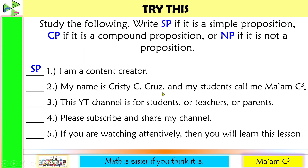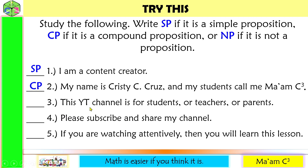We can break number two into: 'My name is Christy C. Cruz' and 'My students call me Ma'am C. Cube.' Since we were able to break this down into simpler propositions, this is a compound proposition. Number three: 'This YouTube channel is for students, or teachers, or parents.' Yes, we can break it down: 'This YouTube channel is for students,' 'this YouTube channel is for teachers,' and 'this YouTube channel is for parents.' So this is a compound proposition.